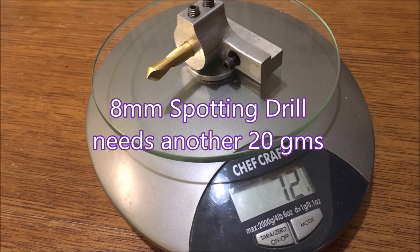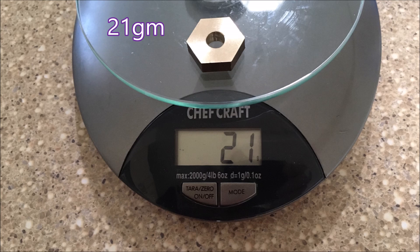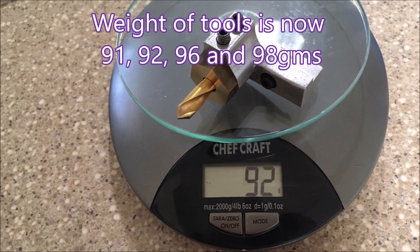The spotting drill also needed another 20 grams. So out in the shed I found some hex, 22.2 across the flats. So I went and drew that up and played with it until I got the length I needed to get 20 grams. And I made the part and there it is, 21 grams. So the weight of the tool is now 92.